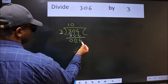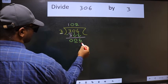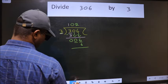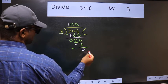Now, 6. When do we get 6 in the 3 table? 3 twos are 6. Now we should subtract. We get 0.